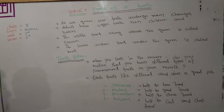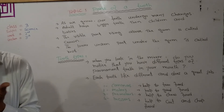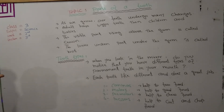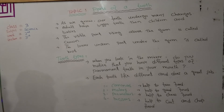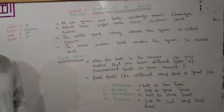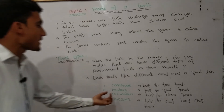First, in the book on page number eight, look at the diagram. Canines are used to tear food — they help to tear food. That is one type of teeth. The second type is molars, which help to grind food.